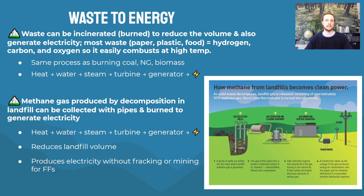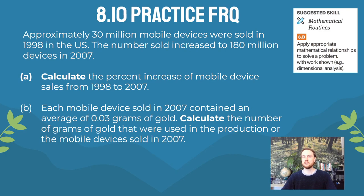For practice FRQ 8.10, we have a calculation-based problem. Approximately 30 million mobile devices were sold in the United States in 1998, and that number increased to 180 million in 2007. The first part is to calculate the percent increase in mobile device sales from 1998 to 2007. The second part is to calculate how much gold would be used in the production of phones in 2007, if each device uses an average of 0.03 grams of gold.